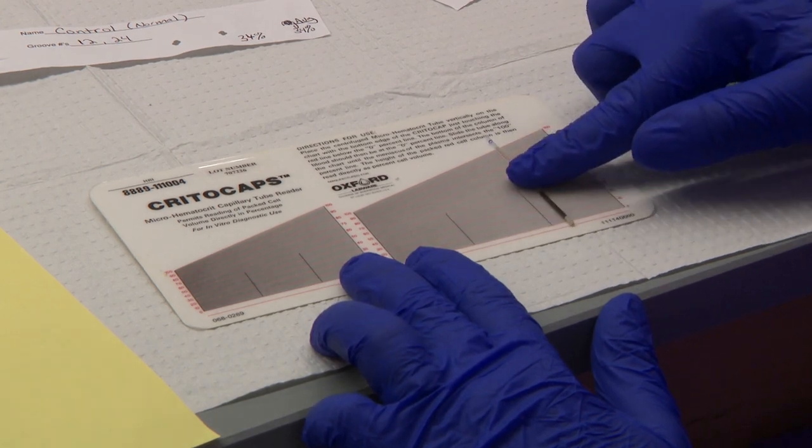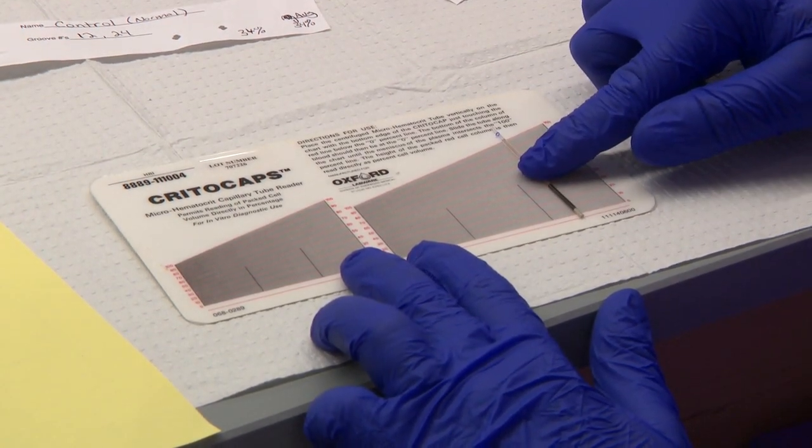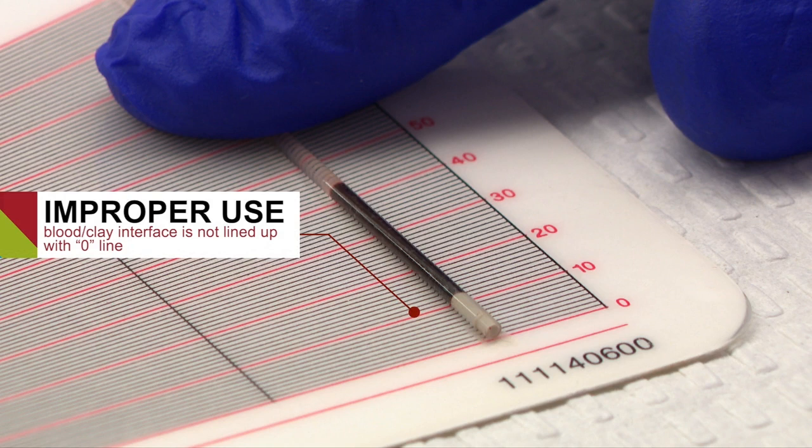If the control is not within the acceptable limits, first check that you are using the hematocrit reader properly. If the hematocrit control is still not within acceptable range, testing must be repeated.